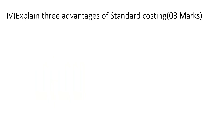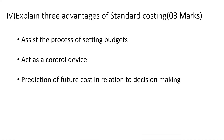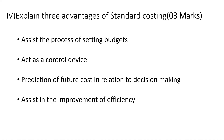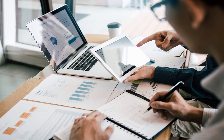The final part is to explain three advantages of standard costing. Standard costing assists the process of setting budgets, can be used as a control device, is used for predicting future costs for decision-making, assists in improving efficiency, and can be used to motivate staff and management. Write at least three of these in your answer. This concludes the past paper discussion on variance analysis for the 2020 paper. In the next video, we will prepare the operating profit statement under marginal and absorption costing systems.